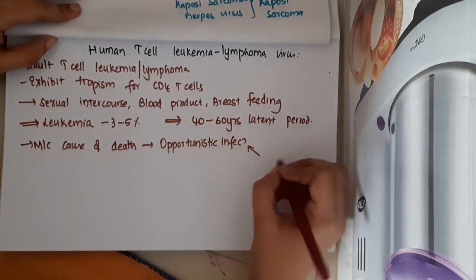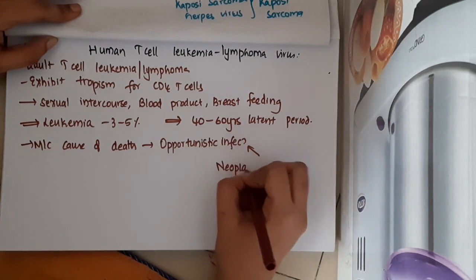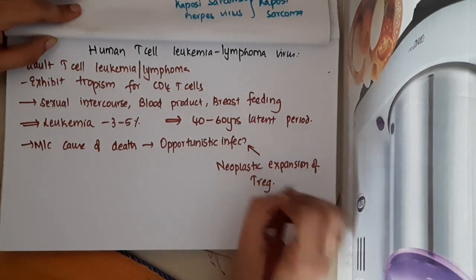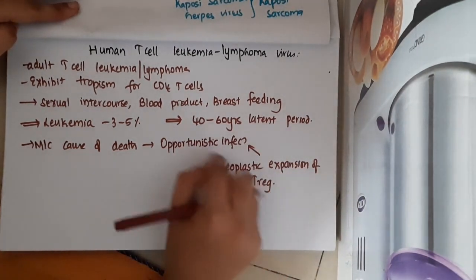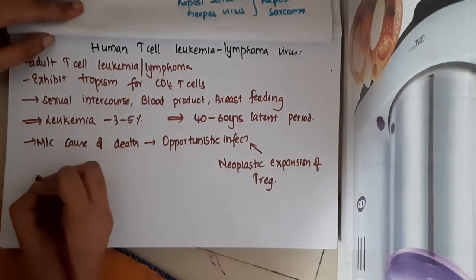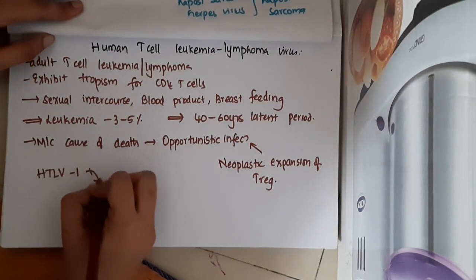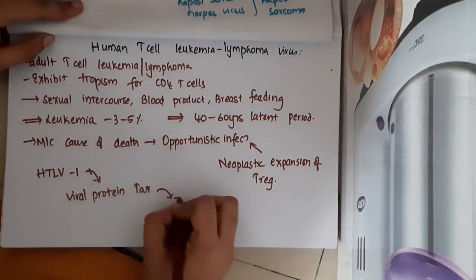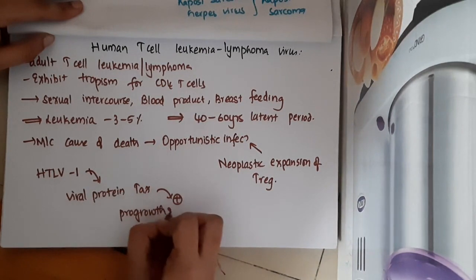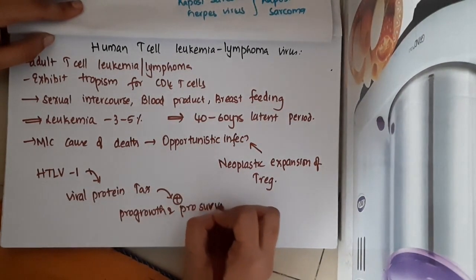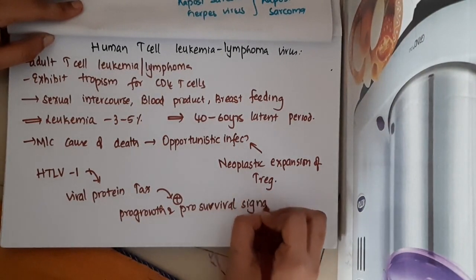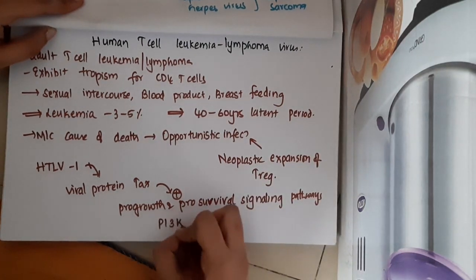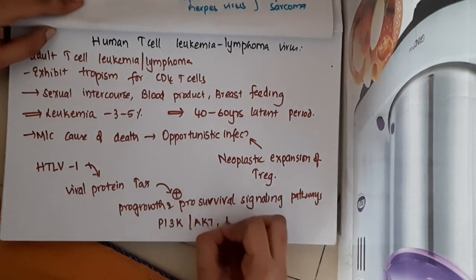Opportunistic infections occur because of neoplastic expansion of T-regulatory cells. The HTLV-1 viral tax gene codes for a viral protein which activates pro-growth and pro-survival signaling pathways, including PI3K/AKT and NF-kappa B.